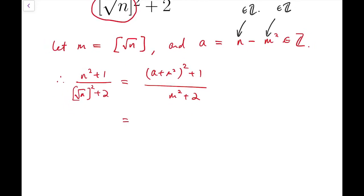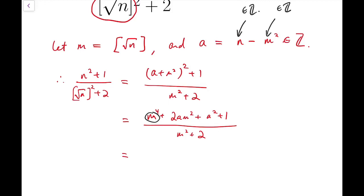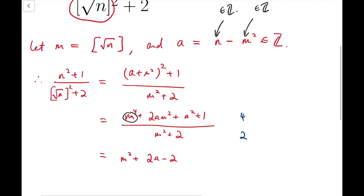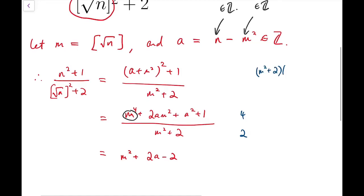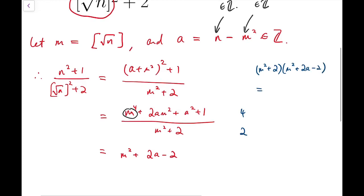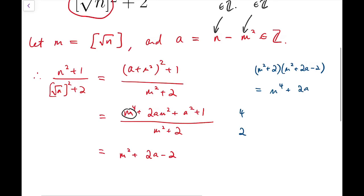This is obviously a much more approachable expression. So we expand it, and of course we can do some polynomial long division, since the numerator and denominator are polynomials in m with degrees 4 and 2 respectively. So we perform long division and obtain m squared plus 2a minus 2, because m squared plus 2 times m squared plus 2a minus 2 gives us at least m to the 4th plus 2am squared, and something else that we can combine with a squared plus 1.